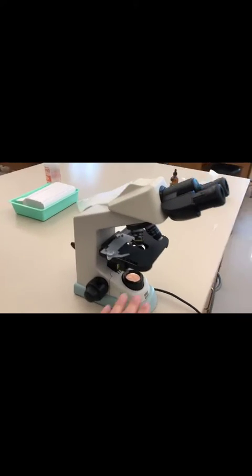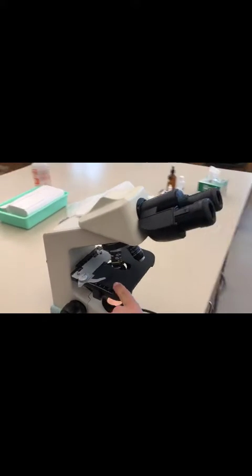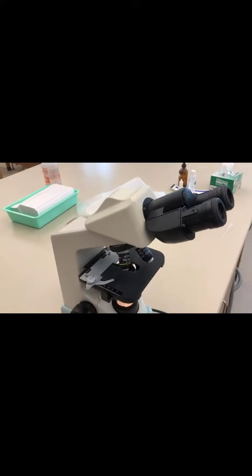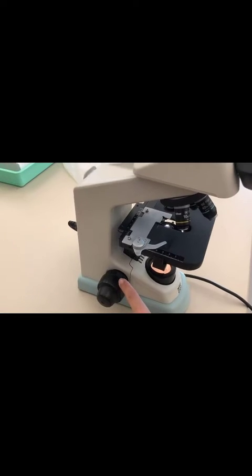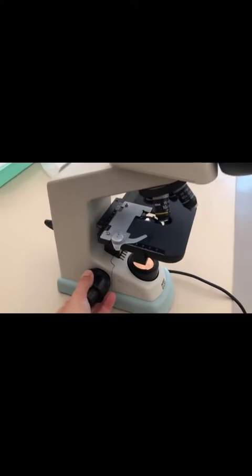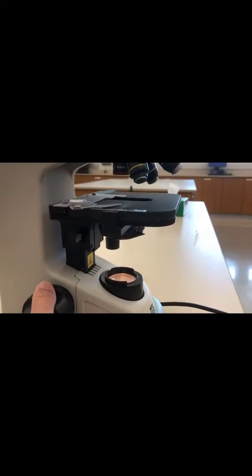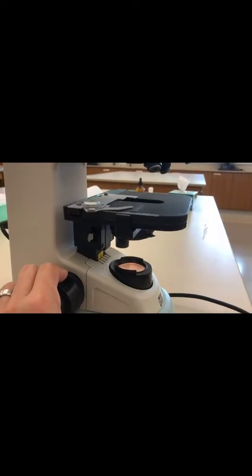Now you've got the microscope on. You want to make sure that this stage where the specimen is going to sit is all the way down. So you're going to turn this knob, the coarse adjustment knob, until the stage goes all the way down. You always want to start that way.